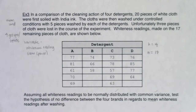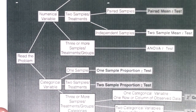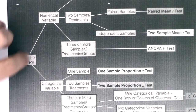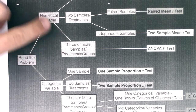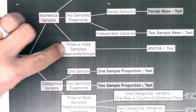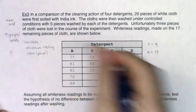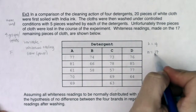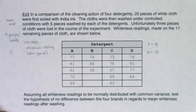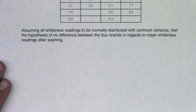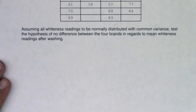Using the flowchart we've had for a couple of chapters: I read the problem, I had a numerical variable, and I had three or more groups — actually four groups — so I'm going to run the ANOVA F-test. By using that flowchart I go with the F distribution. We'll figure out the degrees of freedom in a moment, but let's start with step one.